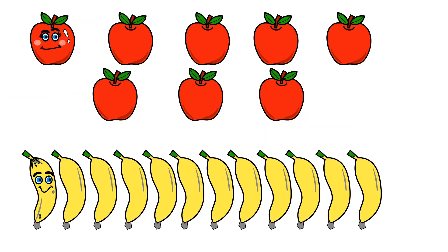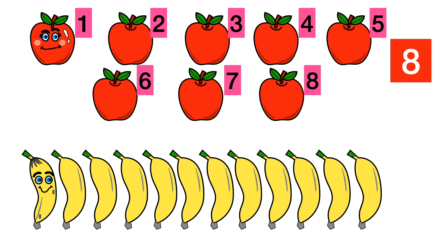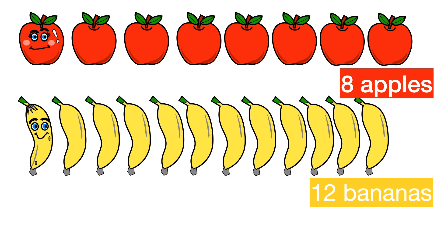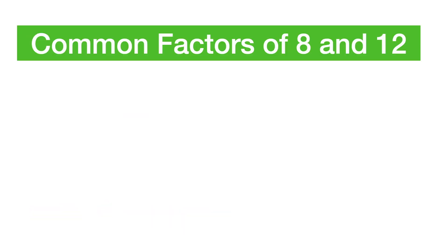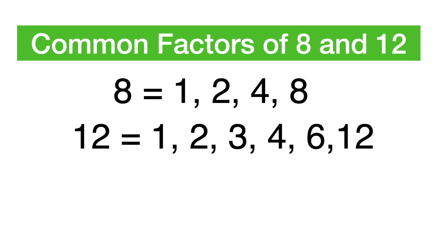Judy has eight apples and twelve bananas. Judy likes to distribute them equally for four people. Let's find GCF of eight and twelve. First we need to find common factors. The factors of eight are one, two, four, and eight. The factors of twelve are one, two, three, four, six, and twelve. The common factors are one, two, and four. The greatest factor is four. Therefore, GCF of eight and twelve is four.